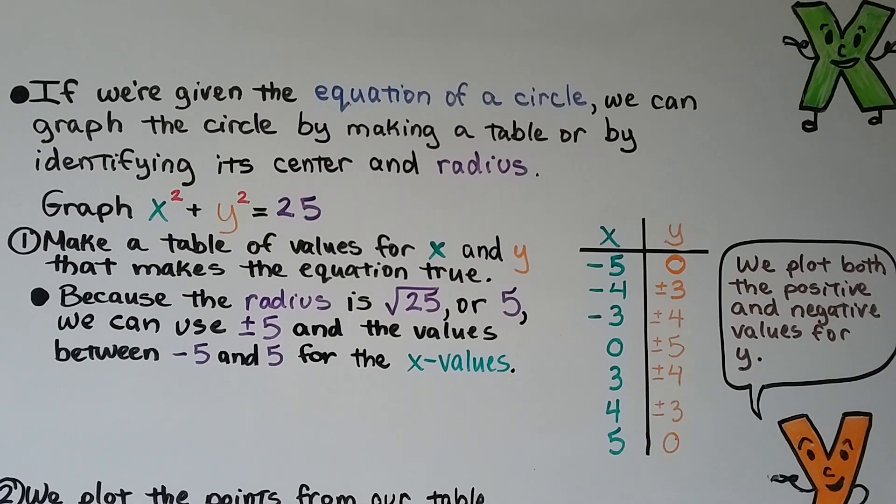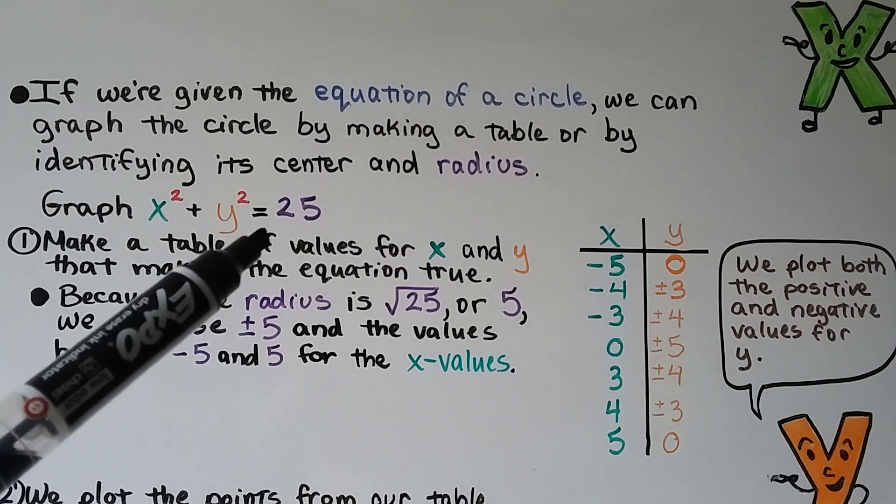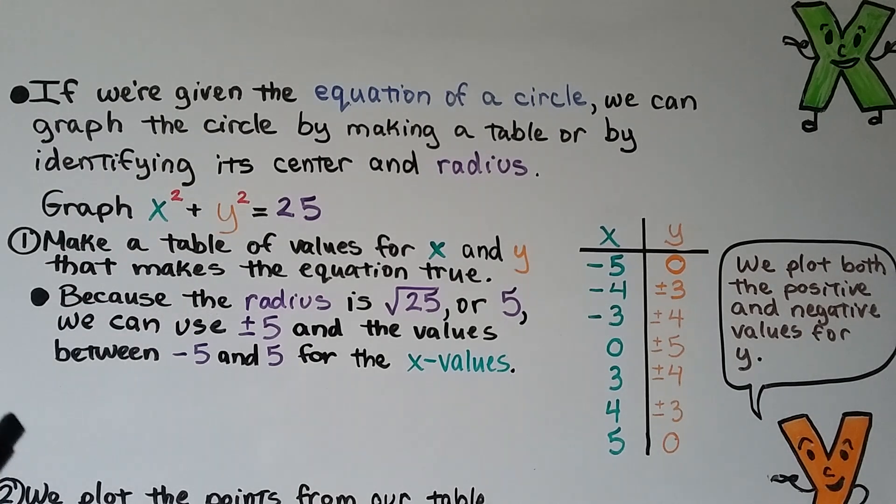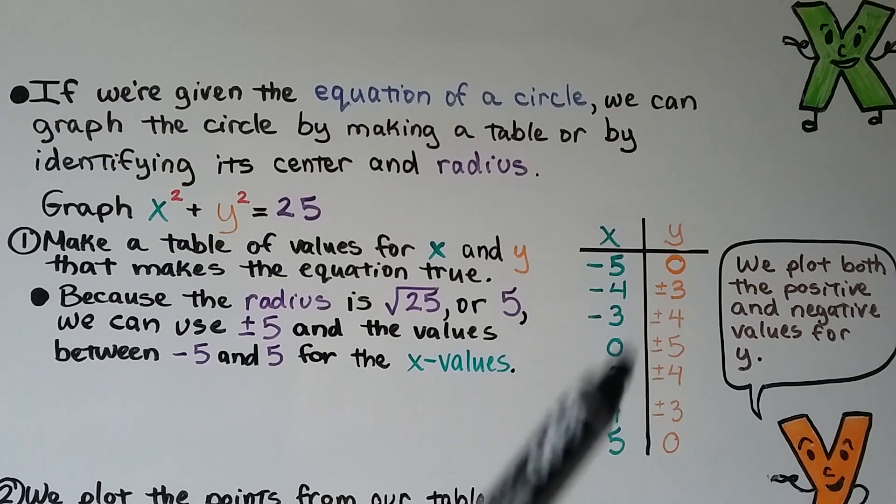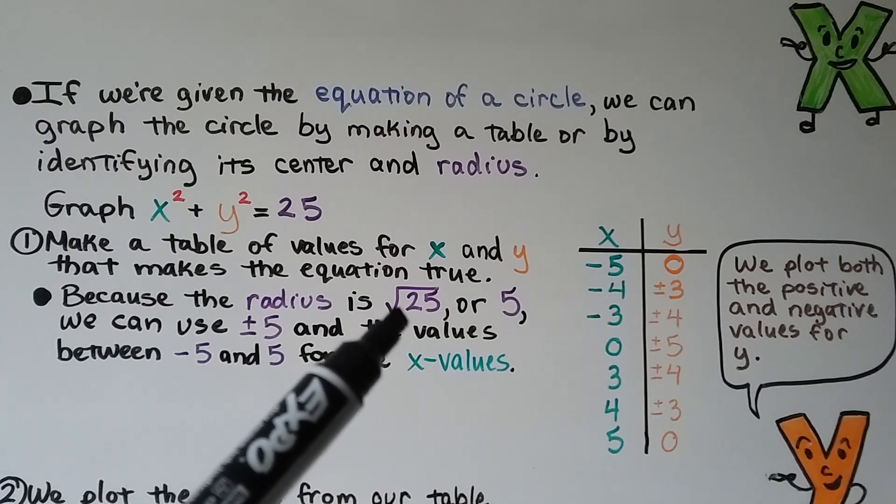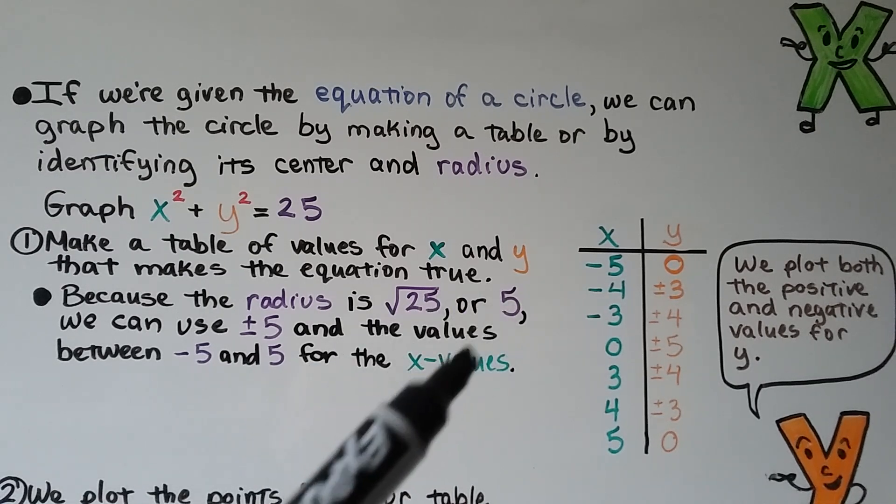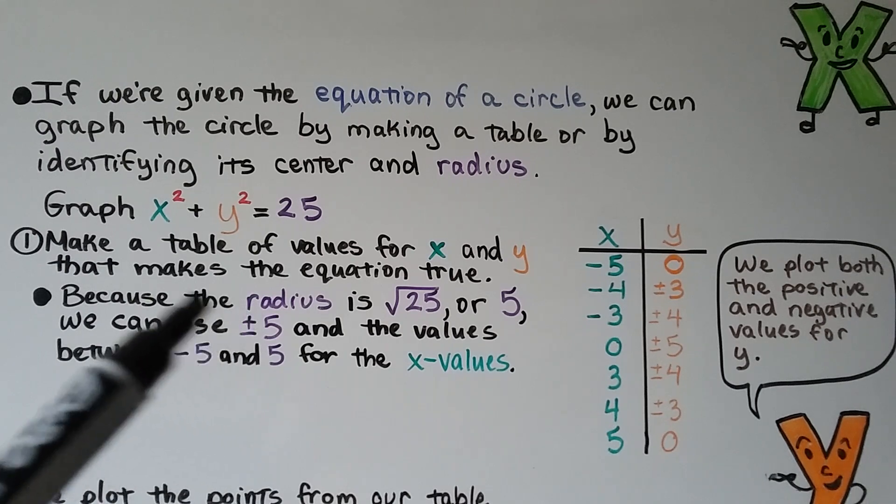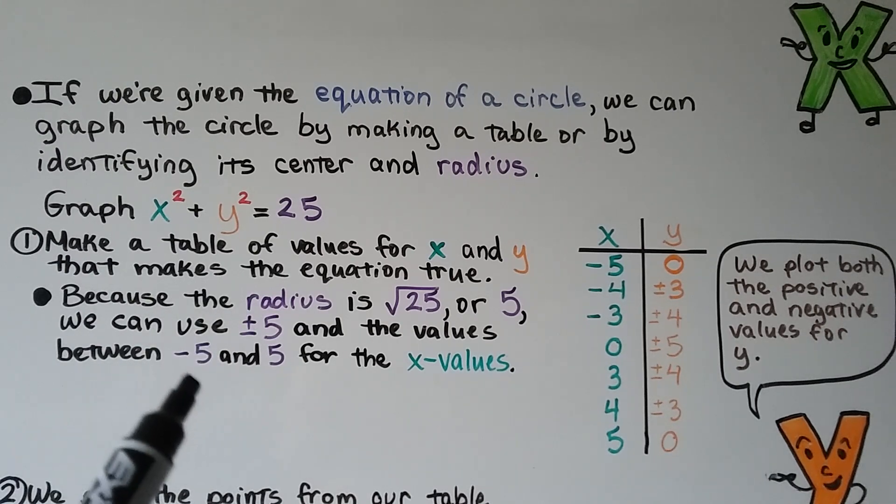If we're given the equation of a circle, we can graph the circle by making a table or by identifying its center and radius. So we can graph x squared plus y squared equals 25. The first thing we do is make a table of values for x and y that makes this equation true. And because the radius is the square root of 25, or 5, we can use plus or minus 5 and the values between the negative 5 and the 5 for the x values.